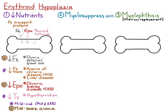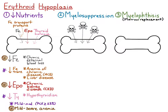This video is going to be on the second cause of erythroid hypoplasia, which is myelosuppression. With myelosuppression, there's some sort of injury to the bone marrow. This includes drugs, infectious agents, and toxins. These agents can either affect all cell lines — injuring red cell, neutrophil, and platelet precursors — or they can just affect red cell precursors. I'll first talk about the generalized marrow insults, and then go into selective red cell suppression.